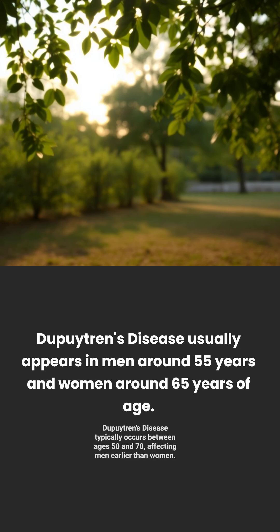Dupuytren's disease typically appears between the fifth and seventh decades of life, presenting earlier in men around 55 years compared to women around 65 years.